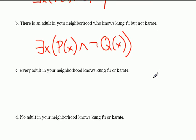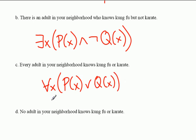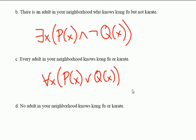Part C. Every adult in your neighborhood knows kung fu or karate. Now here we have a different quantifier. So for all x in the neighborhood, so every adult in the neighborhood, it's true that P(x) or Q(x). So no matter who you choose in the neighborhood, that person is going to either know karate or kung fu.